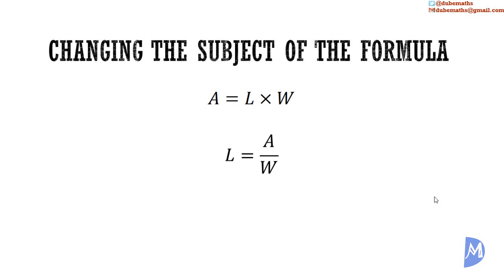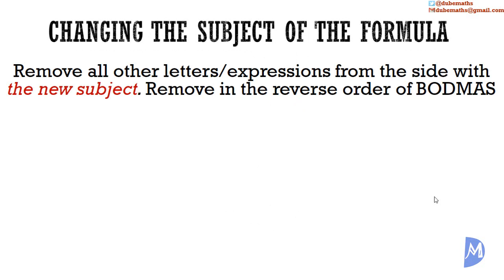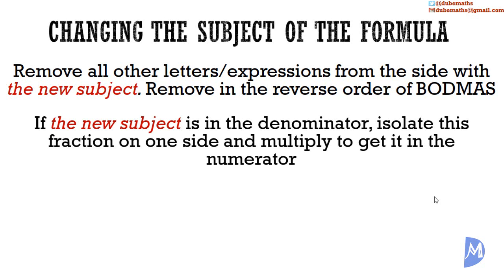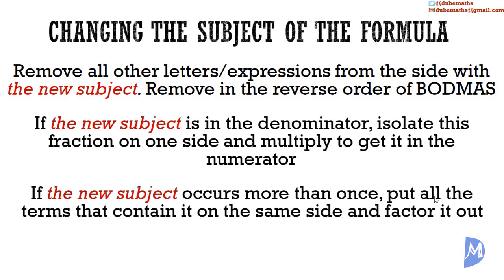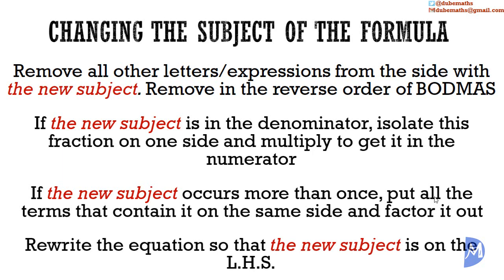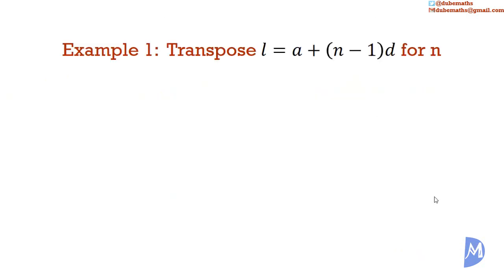What is the formula for the length or width of a rectangle? The formulae are: length is equal to area divided by width, and width is equal to area divided by length. The process of changing the subject of the formula is also referred to as transposing the formula. Some guidance: we remove all other letters or expressions from the side with the new subject, removing them in the reverse order of BODMAS. If the new subject is in the denominator, isolate the fraction on one side and multiply to bring it to the numerator. If the new subject occurs more than once, collect all those terms on one side and factor it out. At the end, rewrite the equation so the new subject is on the left-hand side.